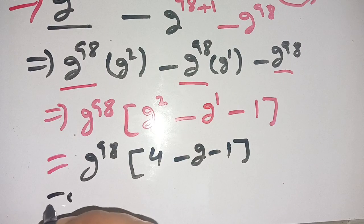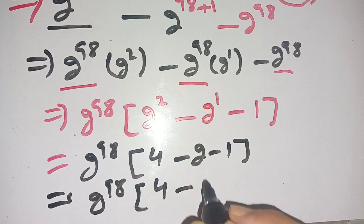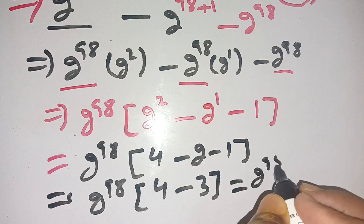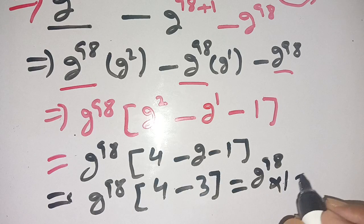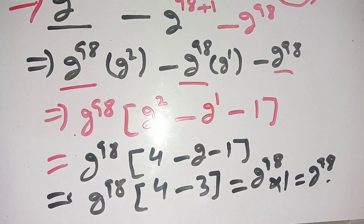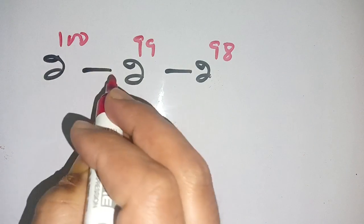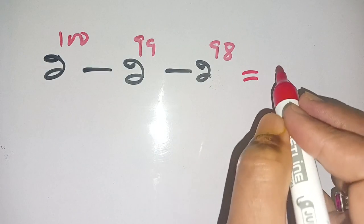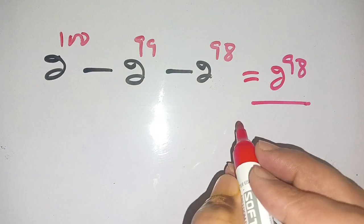We get 2^98 times (4 - 2 - 1), which becomes 2^98 times (4 - 3), which equals 2^98. Thus our final answer is 2^100 - 2^99 - 2^98 equals 2^98, which is our final answer.